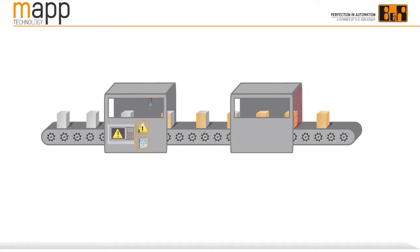Each of these groups contains numerous MAP components. One component governs a machine's alarm system. Another registers and manages recipe parameters, or controls the temperature in an extruder, or controls a servo axis, or a robot. The list goes on and on, and it's being expanded all the time.